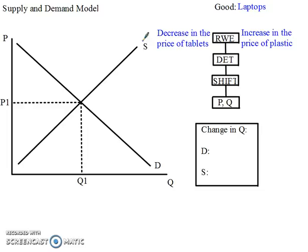My good is going to be laptops, and we're going to look at each one of these real world events separately and see how they affect either the supply or demand side and therefore change the market for laptops. Let's start with the first event: a decrease in the price of tablets.